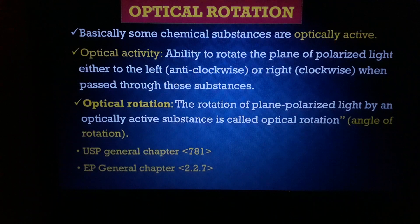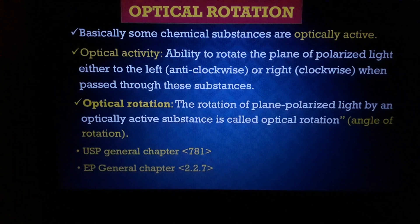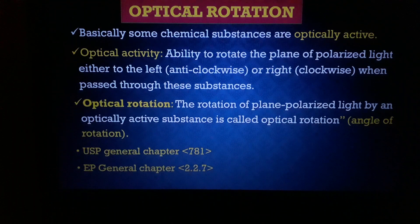Some organic compounds are optically active. Optical activity means the ability of a molecule or compound to rotate the plane of polarized light either to the left or to the right when light is passed through the sample solution. By definition, optical rotation is the rotation of the plane of polarized light by an optically active substance — it is the angle of rotation produced when a plane of polarized light passes through the solution.